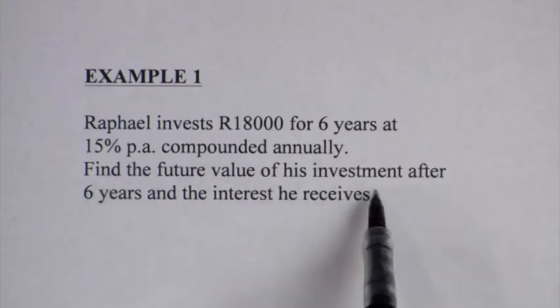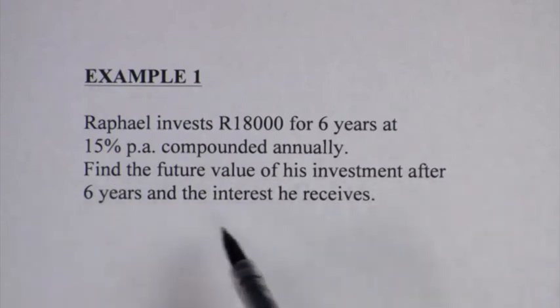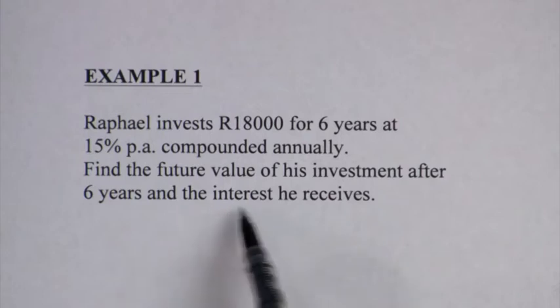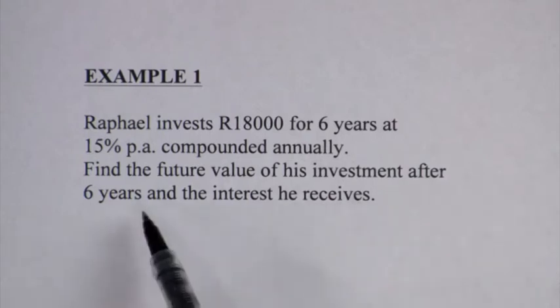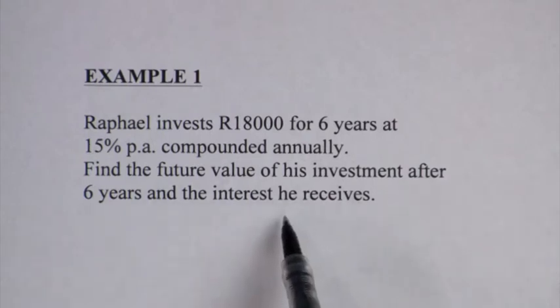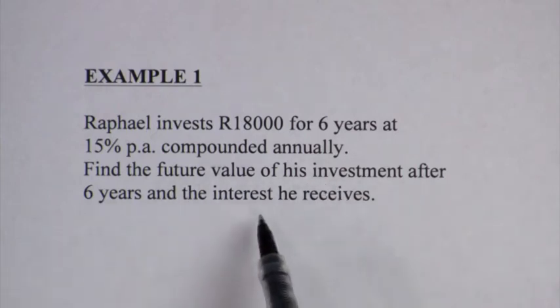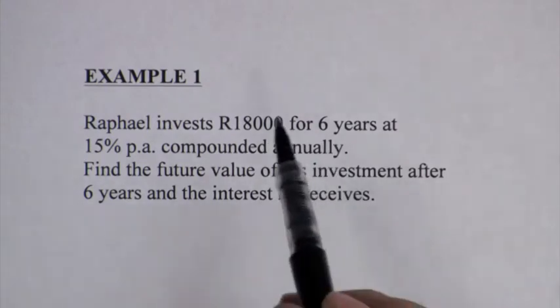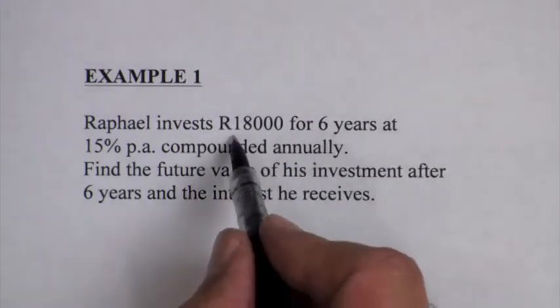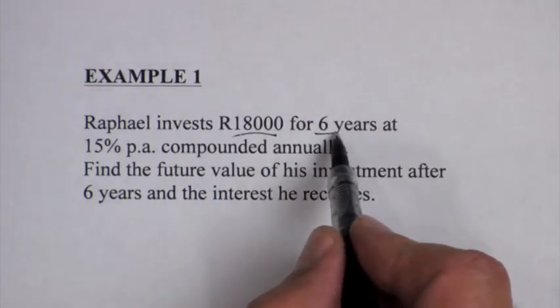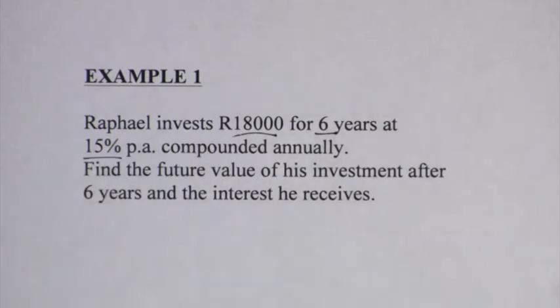Find the future value of this investment after the six years as well as the interest he receives. So there are two things that we need to calculate. What is the future value and what is the total interest he will receive? He will invest 18,000 for six years at 15% per annum. Let's calculate this.